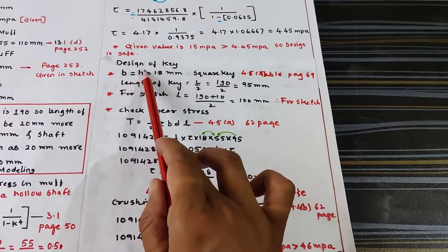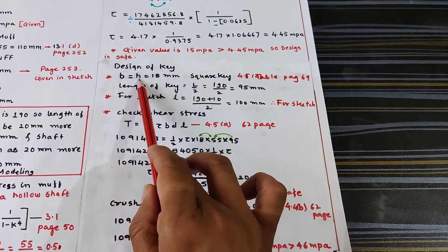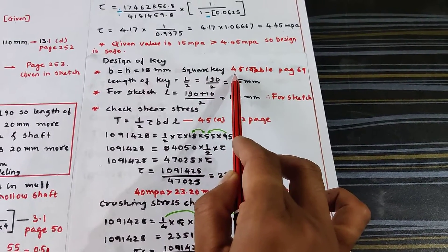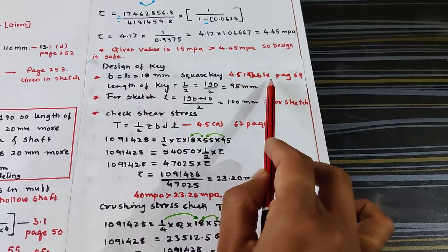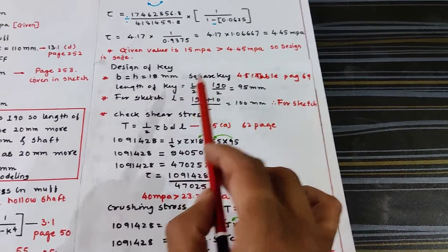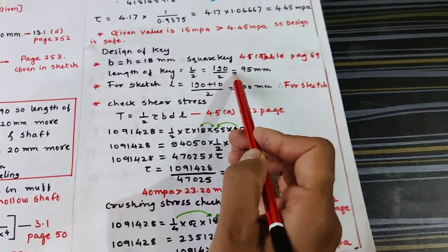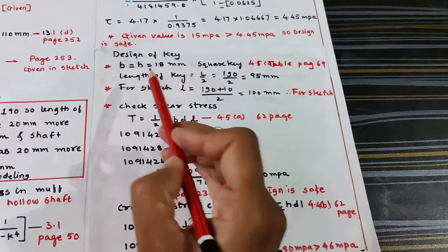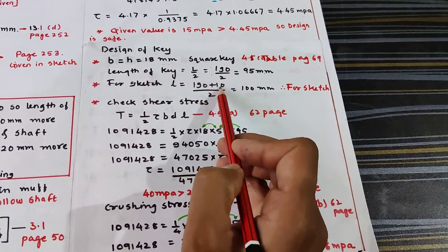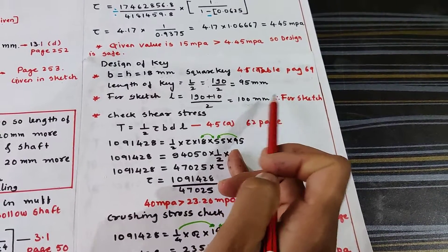For the design of the key, using a square key where B = H = 18 mm (from table 4.5, page 69), the length of the key is taken as L/2, where L is the hub length: 190 / 2 = 95 mm. For sketching purposes, the key length is taken as 10 mm extra: (190 + 10) / 2 = 100 mm.